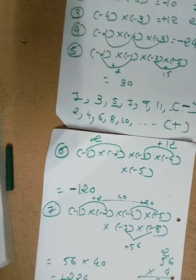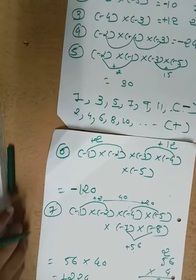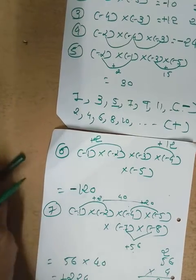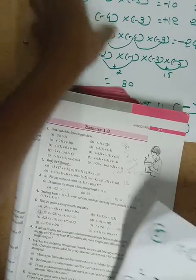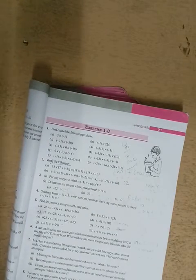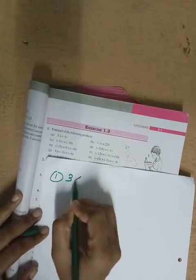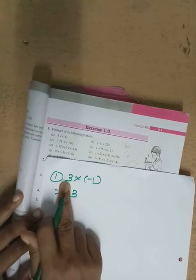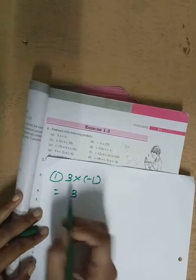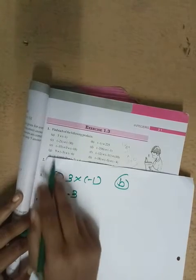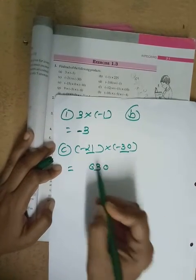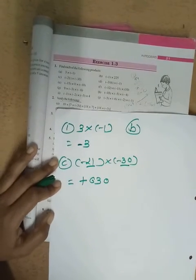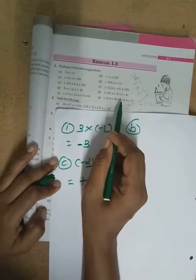Exercise 1.3, question number 1: find each of the following products. First example: three multiply by minus one — three ones are three, and we have two numbers with one negative, so the answer is minus three. Part b: minus twenty-one multiply by minus three — twenty-one threes are sixty-three, and minus minus gives plus, so the answer is plus sixty-three. So you can complete question one — that is your homework.